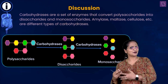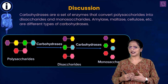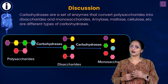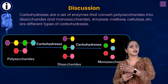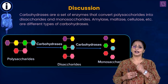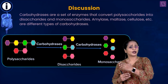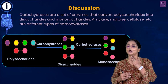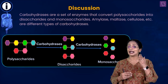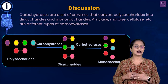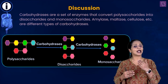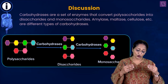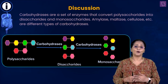Carbohydrates get converted to monosaccharides — that is, polysaccharides get converted to monosaccharides. Proteins get broken down to amino acids. Lipids get broken down to fatty acids and glycerol. Nucleic acids get broken down to sugars and nitrogenous bases. So when looking at carbohydrates such as polysaccharides like starch...